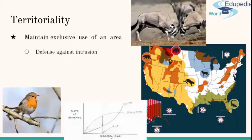Regarding territorial behavior: animals often move over a large area, called a home range, during their daily activity. In many species, the home ranges of several individuals may overlap in time or space, but each individual defends a portion of its home range exclusively. This behavior — in which individual members of a species maintain exclusive use of an area containing limiting resources such as foraging grounds, food, or potential mates — is called a territory.